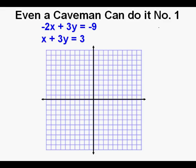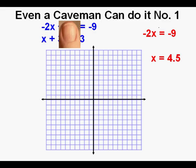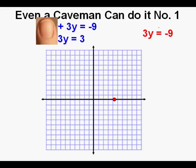Og graphs the first equation by covering the y term with his opposable thumb. He is left with negative 2x equals negative 9. He solves for the x-intercept by dividing by negative 2, giving 4.5, and marks 4.5 on the x-axis. He then covers the x term, giving 3y equals negative 9. The y-intercept is negative 9 divided by 3, which equals negative 3. He marks it on the y-axis at y equals negative 3.